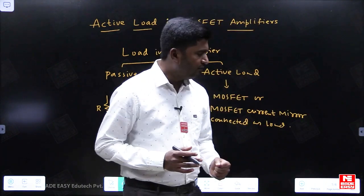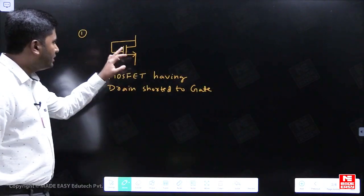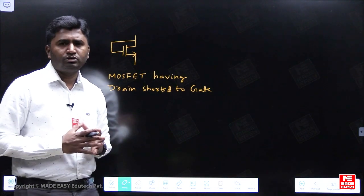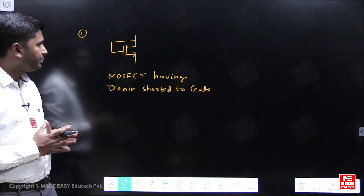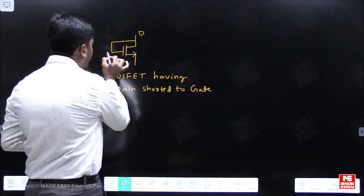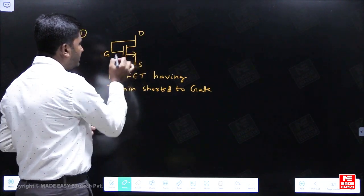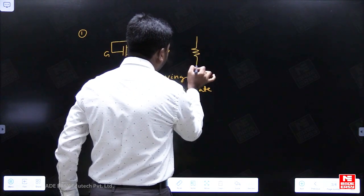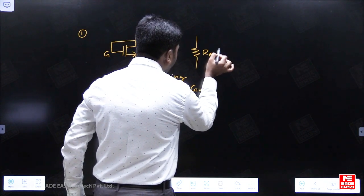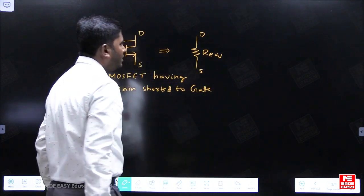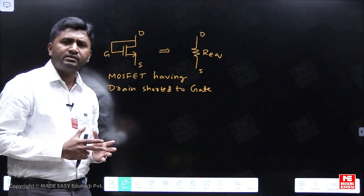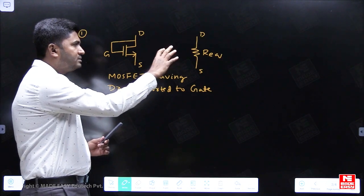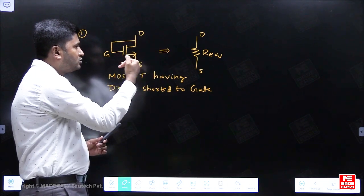An example of an active load is a MOSFET in which the drain is shorted to the gate. When we come across this type of MOSFET connected as a load, this MOSFET will be replaced by some equivalent resistance R_equivalent, which is the small signal resistance between drain and source.